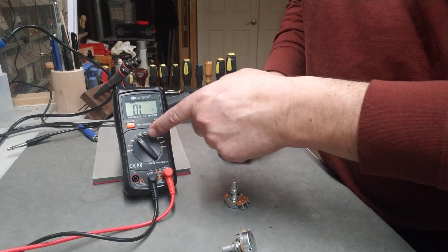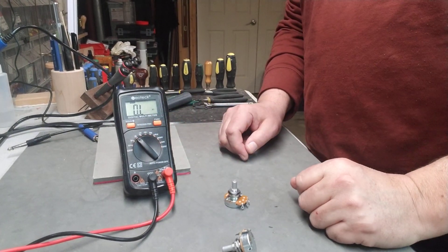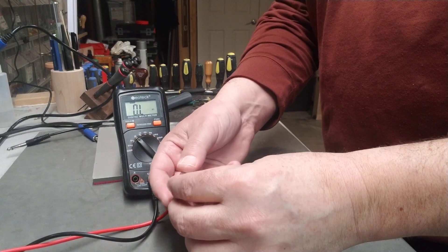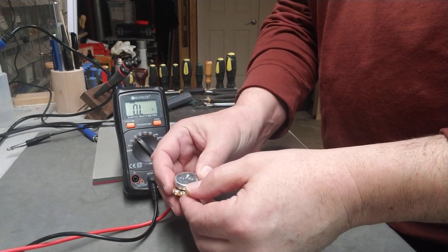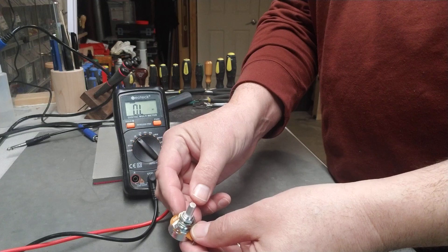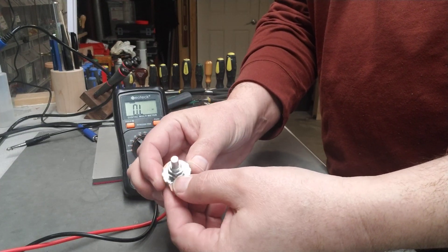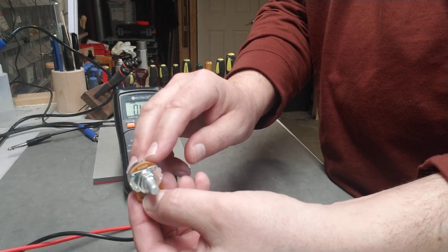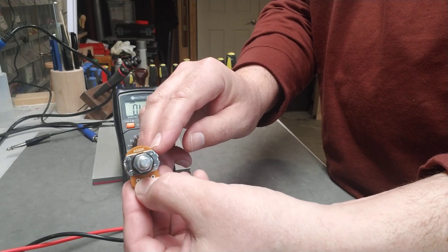So I've got the multimeter here set up for ohms to show resistance. If you take your pot, this is an Alpha 500 pot right here. You can see A500K right there.